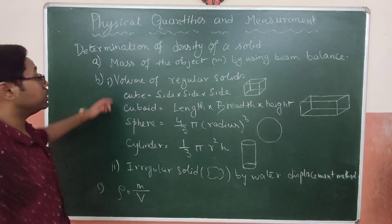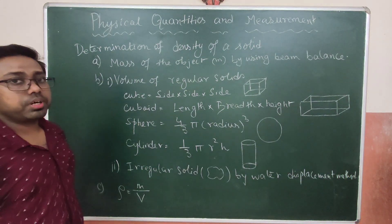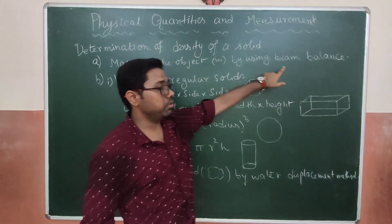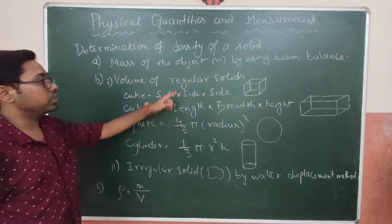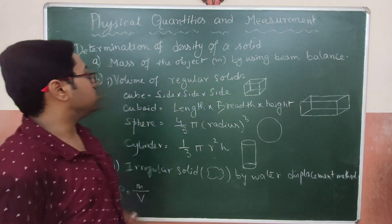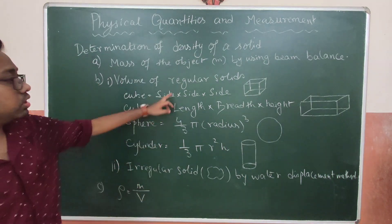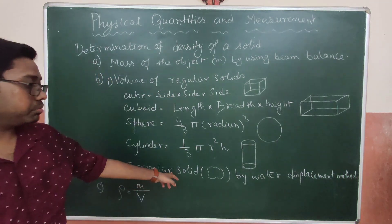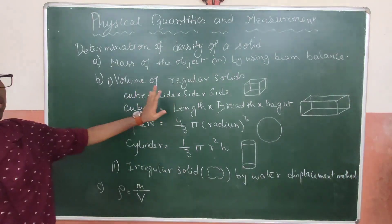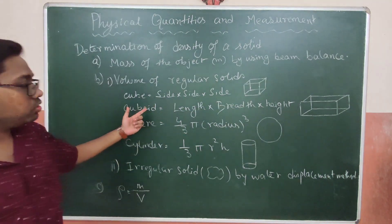Next, we will learn how to determine the density of a solid. First, we find its mass using a beam balance — we place the object on the beam balance and use a weight box to find its mass. Next, we find its volume. There are two types of solids: regular solids, whose shape is well-defined, and irregular solids, whose shape is not defined. For example, a cube has all sides equal.